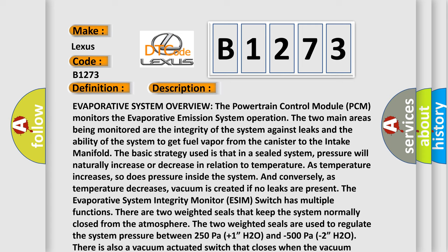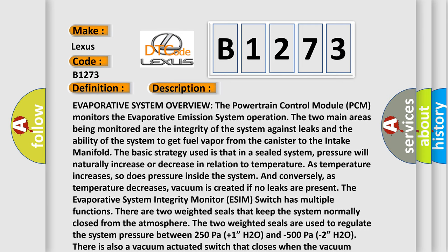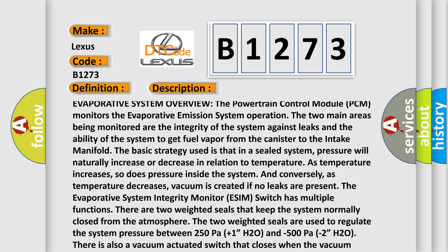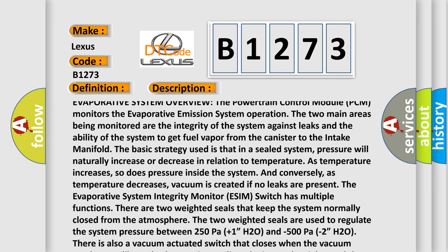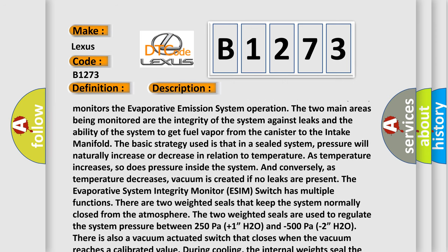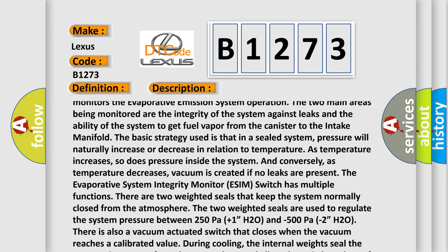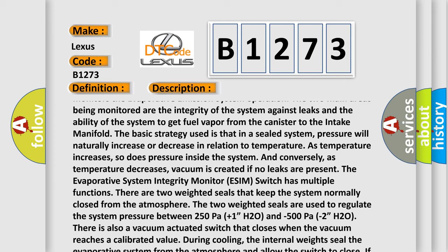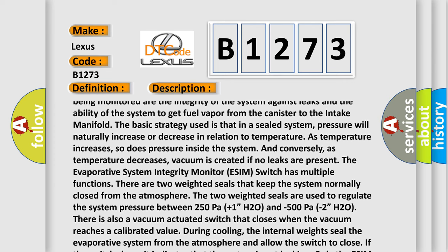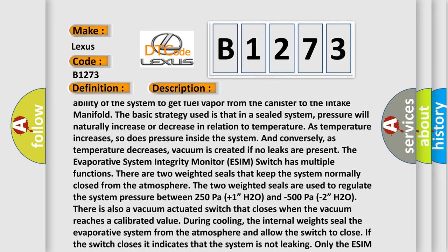Evaporative System Overview: The Powertrain Control Module (PCM) monitors the evaporative emission system operation. The two main areas being monitored are the integrity of the system against leaks and the ability of the system to get fuel vapor from the canister to the intake manifold. The basic strategy used is that in a sealed system, pressure will naturally increase or decrease in relation to temperature. As temperature increases, so does pressure inside the system, and conversely, as temperature decreases, vacuum is created if no leaks are present.